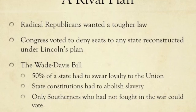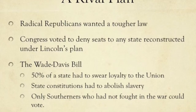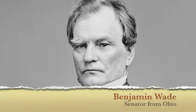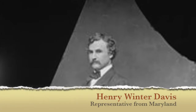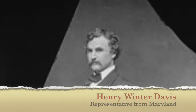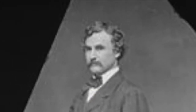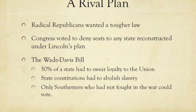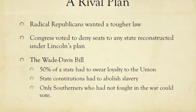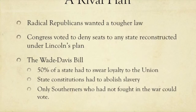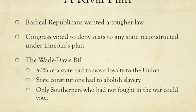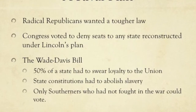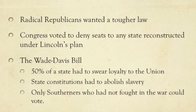Then two men stepped forward to propose a rival plan — Benjamin Wade, a senator from Ohio, and Henry Winter Davis, a representative from Maryland. They proposed what comes to be known as the Wade-Davis Bill, which was a much tougher reconstruction plan. They asked that 50% of the states swear loyalty to the Union, that the states abolish slavery, and that only Southerners who had not fought in the war would be allowed to vote.